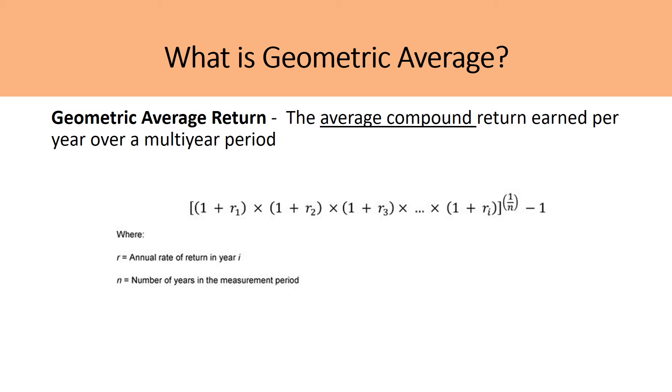So what about geometric average? The difference is that the geometric average return is the average compound return earned per year over a multi-year period. So instead of simply adding up the return values and then dividing by the number of returns, we are adding one to each of the return values in each period, multiplying each of those products to then raise that to the power of one over n, the number of periods, and then subtracting by one.